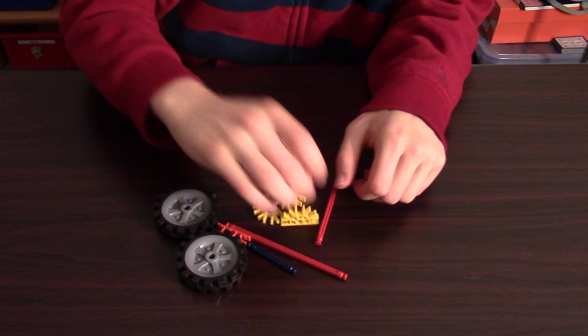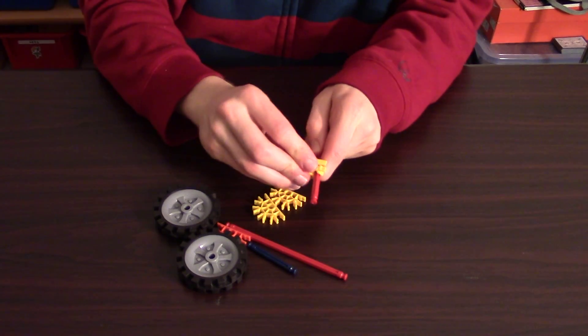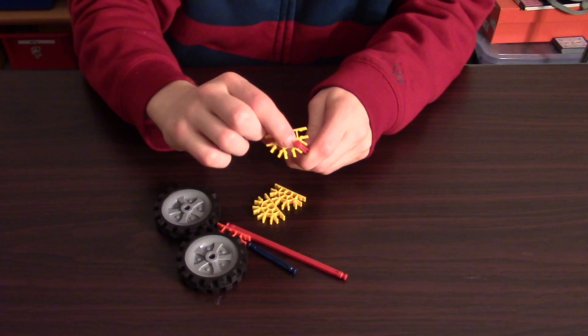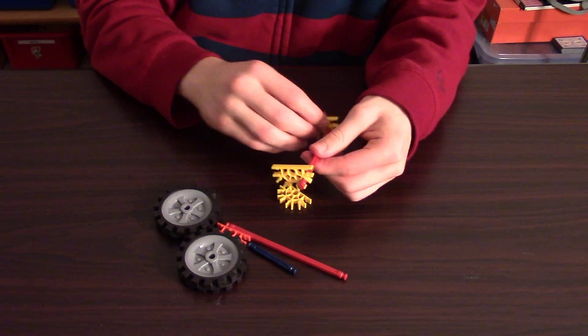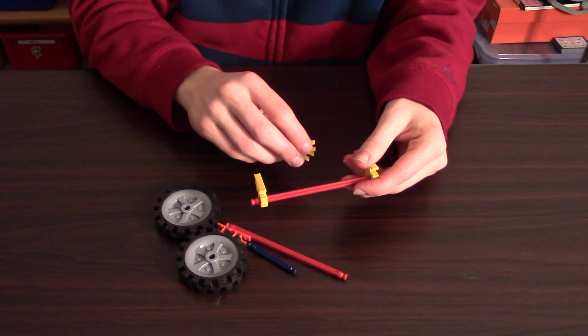So you're going to start by taking two of the yellow pieces and sliding them into the second groove here on the red rod. Two of them are going to go on each side, like that, and one of them is going to go in the center.